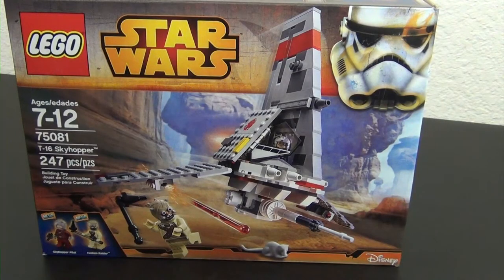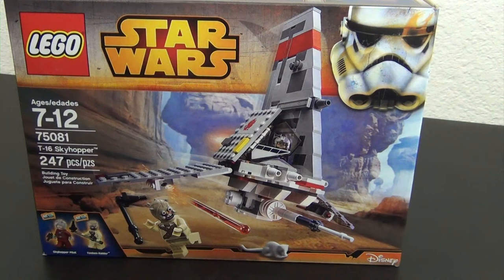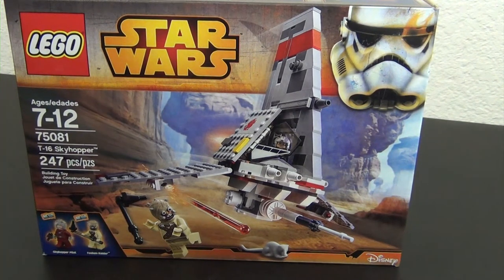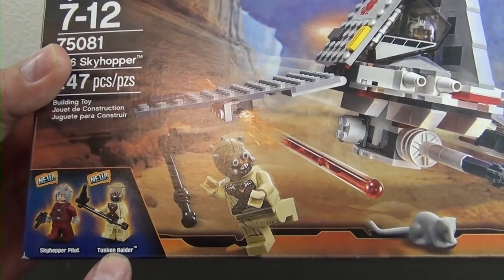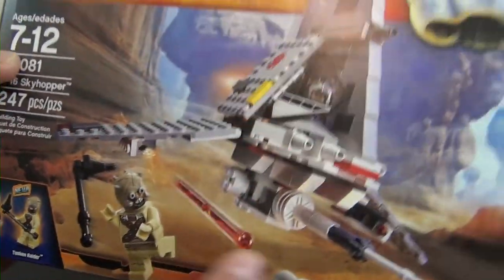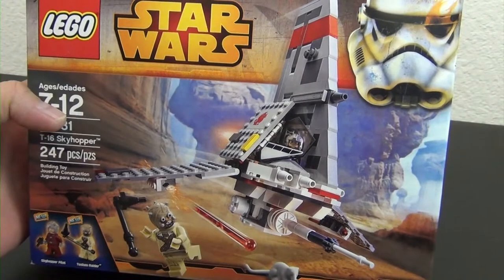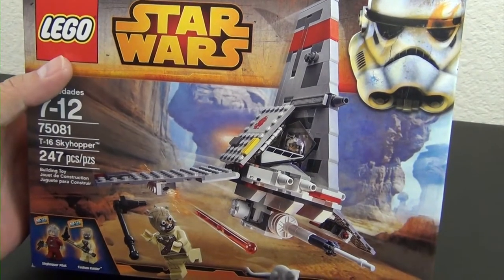Hey everyone, welcome back to the Hidden Brick where today we're going to build the Lego Star Wars T-16 Skyhopper. This is set number 75081, 247 pieces, two minifigures. We have the Skyhopper pilot and we have a Tusken Raider. This came out in 2015.